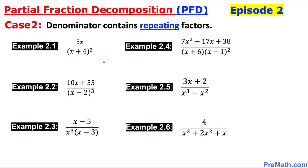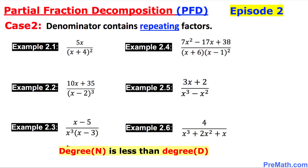Here are some examples. We call them repeating — look at example 2.1: x plus 4 power 2 could be written as x plus 4 times x plus 4. Likewise, x minus 2 power 3 could be written as x minus 2 times x minus 2 times x minus 2, repeating itself 3 times. Also, the degree in the numerator must be less than the degree in the denominator, as shown in our examples.